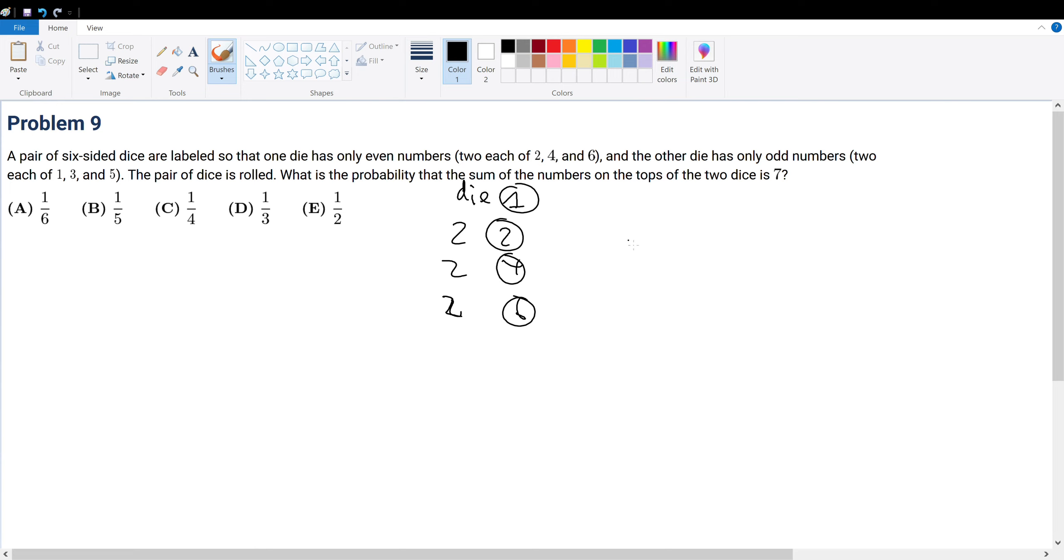Now let's consider the next one. The other die has only odd numbers, so we have two 1s, two 3s, and two 5s on die number two. The pair of dice is rolled. What's the probability that the sum of the numbers on the top of the dice is equal to 7?